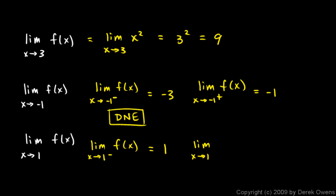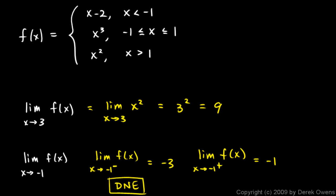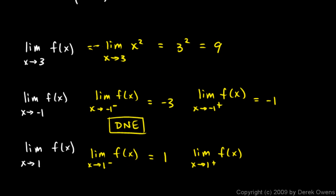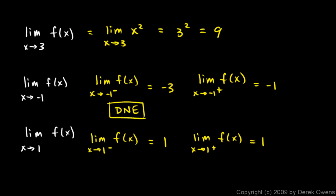And the limit as x approaches 1 from the right of f of x. Well, if x is just a little bit bigger than 1, then our function is x squared. Remember right here, x is a little bit bigger than 1. It's x squared. So this is just 1 squared, which is 1. So the left and right limits both exist, and they're the same. So that is the limit. So the answer here is 1.